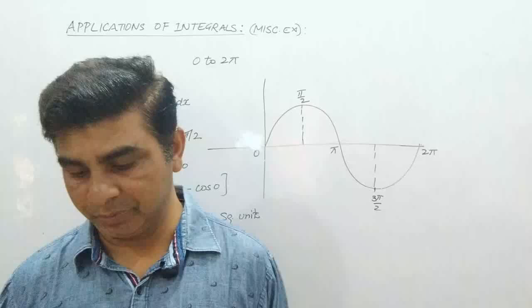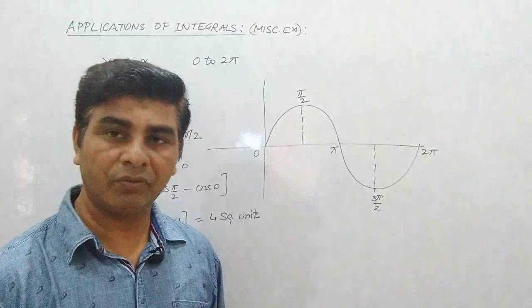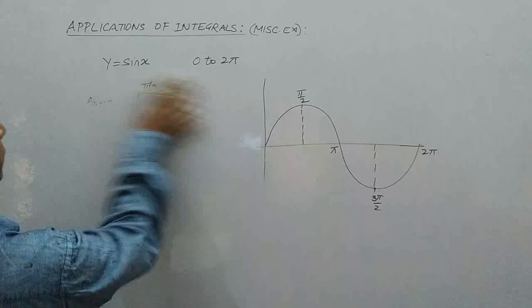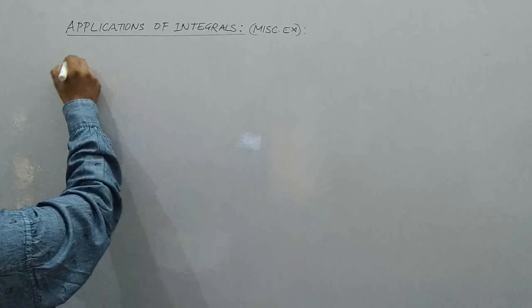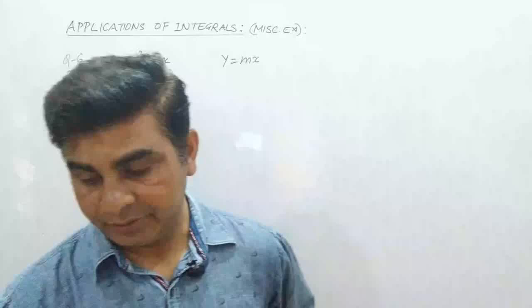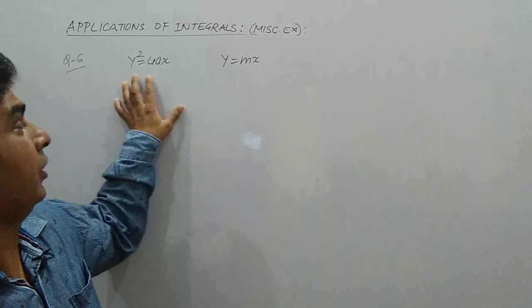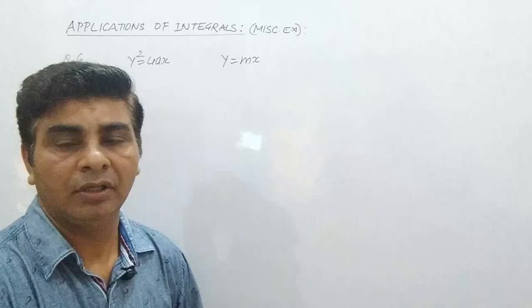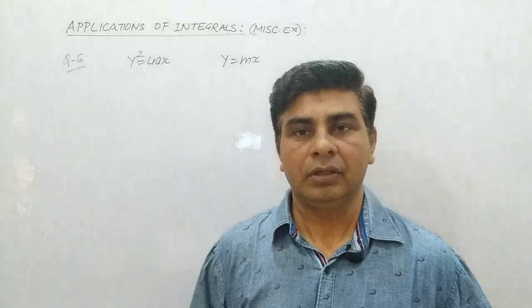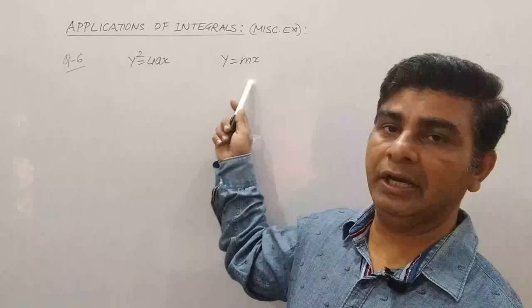Let's do question number 6: find the area enclosed between the parabola y² equal to 4ax and the line y equal to mx. The equation y² = 4ax is identified as a right-handed parabola, and y = mx is the equation of a line passing through the origin, since the point (0, 0) satisfies the line equation.